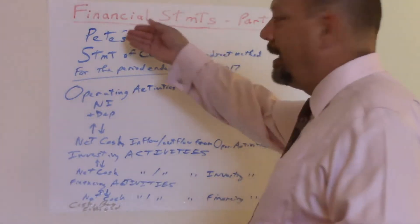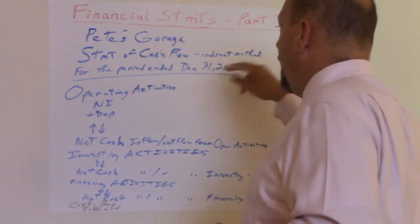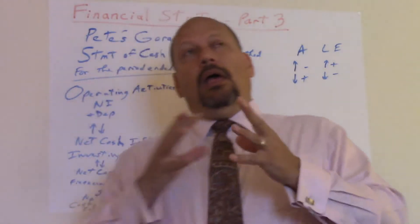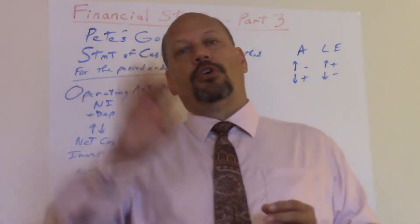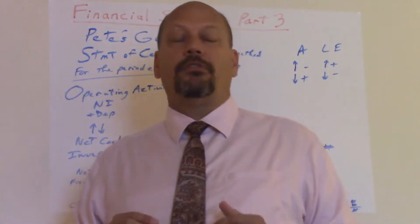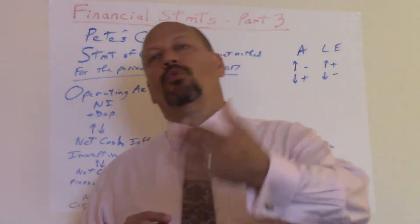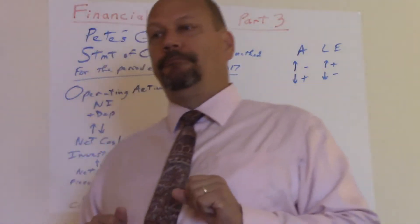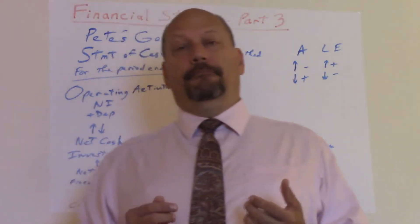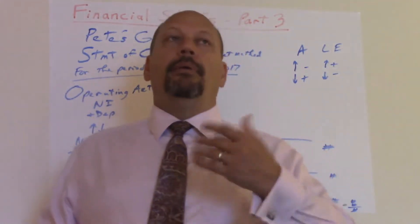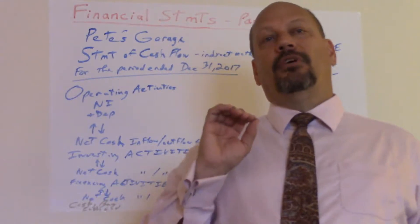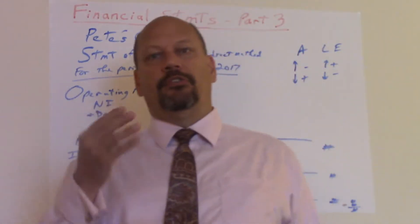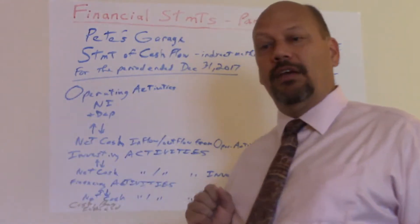You start with the heading: company name, Pete's Garage, Statement of Cash Flows, Indirect Method. There are two methods — direct and indirect. The controlling bodies, like the Securities and Exchange Commission and FASB (Financial Accounting Standards Board), follow Generally Accepted Accounting Principles. They say the preferred method is the direct method, but that requires tracking every single cash transaction and categorizing each one as operating, investing, or financing.